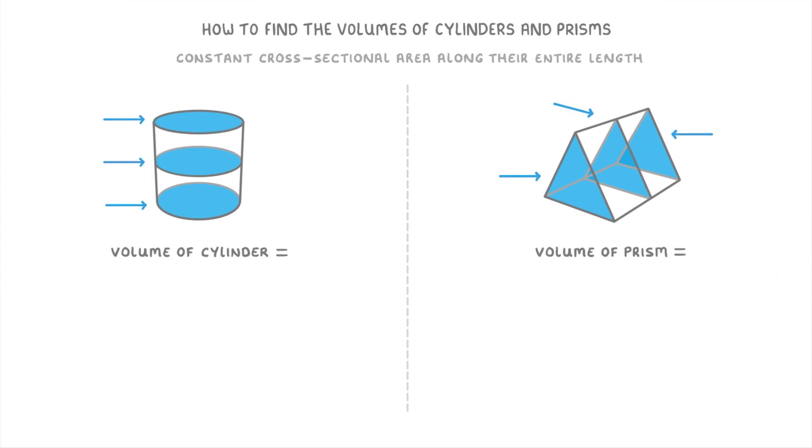This means that to find their volume, all we have to do is find the area of that cross-section, and then multiply it by the height for cylinders, or the length for prisms.